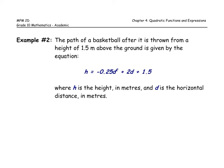The problem states: the path of a basketball after it is thrown from a height of 1.5 meters above the ground is given by the equation h = -0.25d² + 2d + 1.5, where h is the height in meters and d is the horizontal distance. So we're mapping our height against our distance.